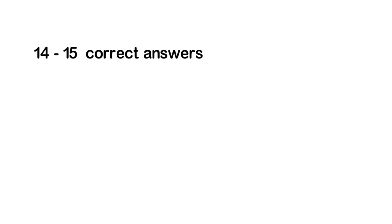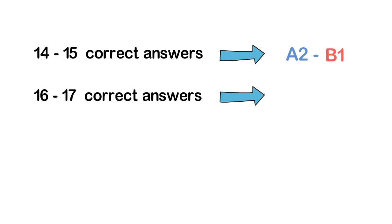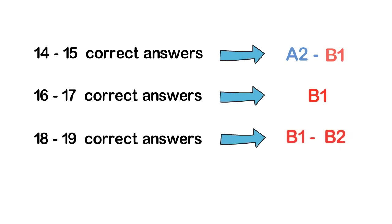With 14 or 15 answers right, your level is somewhere between A2 and B1. With 16 or 17 correct answers, your level is B1. When you get 18 or 19 answers right, you're between B1 and B2. If you got 20 answers right, your level is B2.